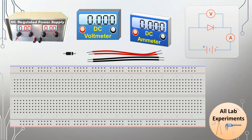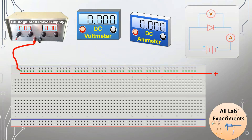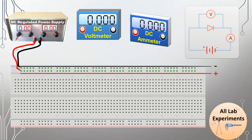In the first step we are going to connect the positive of the power supply to the horizontal line of the breadboard, and then we connect the negative of the power supply to another line on the breadboard. We have done this so that at any part of this breadboard we can take the positive or negative of the power supply.